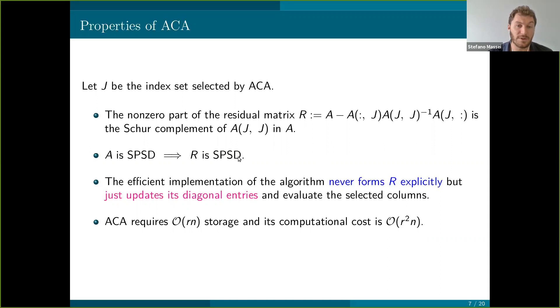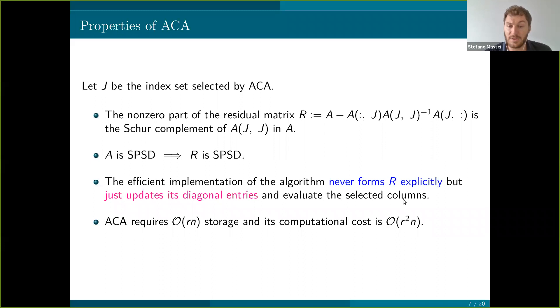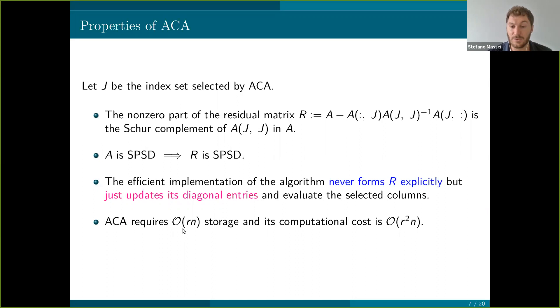Maybe more importantly, you can provide a very efficient implementation of this method, avoiding forming the residual matrix in every step, because the only thing that you need of the residual matrix are the diagonal entries for choosing the pivot. So you just need to update the diagonal entry and the column and row that you select for the approximate. At the end of the day, you can provide an implementation that has a linear cost both in storage and in computational time.